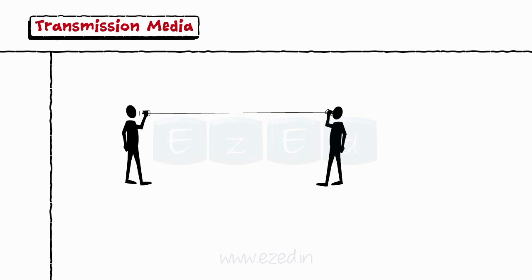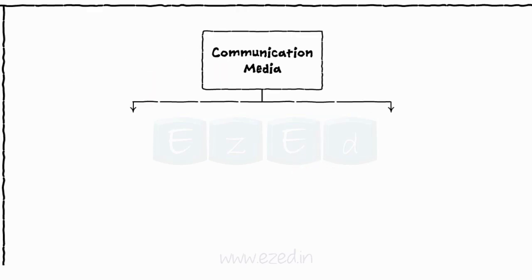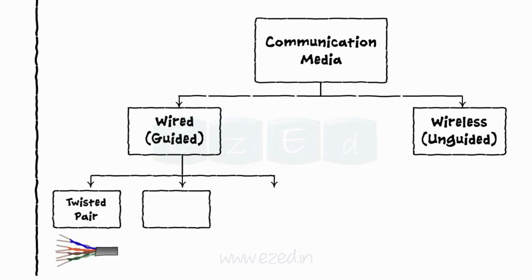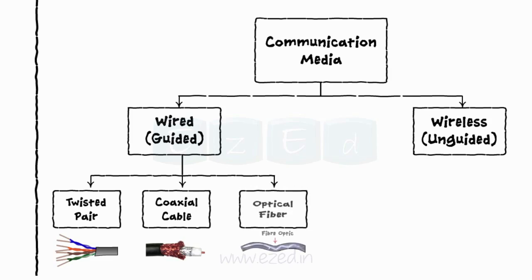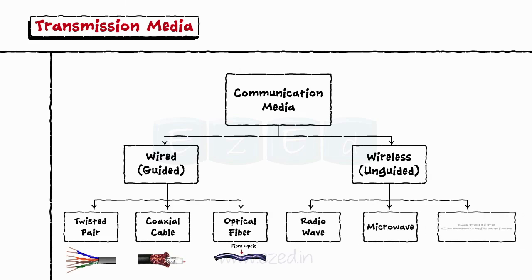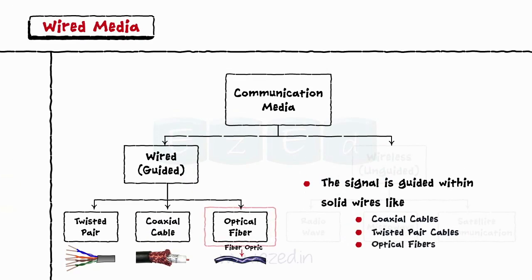Let's see different transmission media now. Communication media is the medium over which information travels from the sender to the receiver. This media is mainly divided into two types: wired media and wireless media. Different types of wired media are twisted pair cables, coaxial cables, and optical fiber cables. While different types of wireless media are radio wave, microwave, and satellite communication. In wired media, the signal is guided within solid wires like coaxial cables, twisted pair cables, optical fibers, etc.